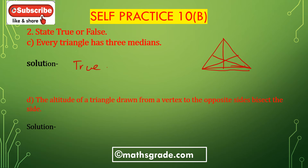Bit D: The altitude of a triangle drawn from the vertex to the opposite side bisects the side. This is false. It is the median of a triangle drawn from the vertex to the opposite side that bisects the side.